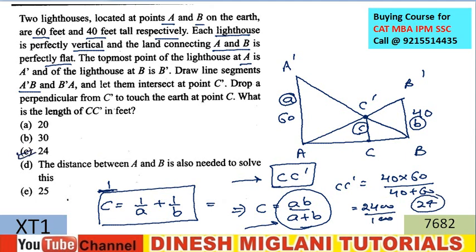What you have to remember here: at any moment, if you have any figure of this type, give attention to the fact that these three lines are parallel to each other. If they are parallel, without any problem you can apply the concept: 1/C = 1/A + 1/B, or C = AB/(A+B). The answer is 24.